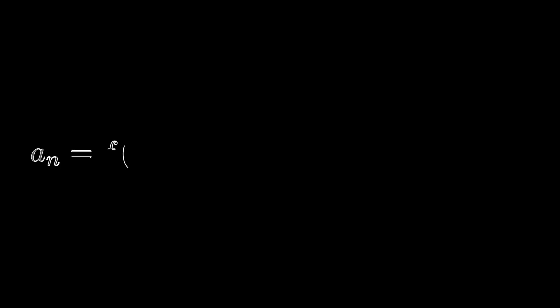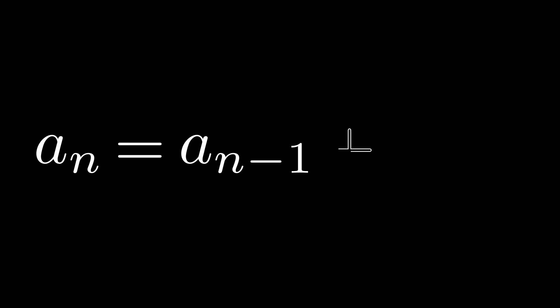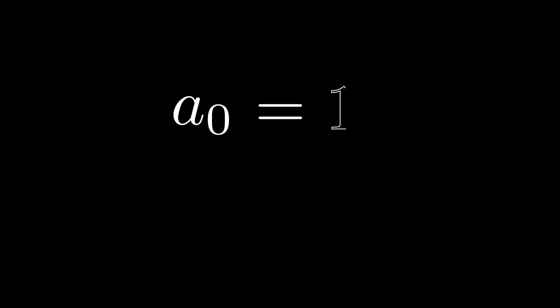The general form of a recurrence formula is: a_n = f(a_(n-1), a_(n-2), a_(n-3), ..., a_(n-k)), where a_n is the nth term and f is a function describing how to calculate that term based on the previous k terms. For example, the recurrence formula for the Fibonacci sequence is a_n = a_(n-1) + a_(n-2), with initial terms a_0 = 1 and a_1 = 1.